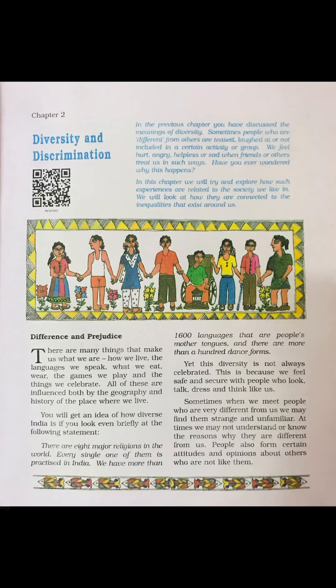And discrimination means — suppose in your class there are 20 students, but all do not belong to the same family, the same religion, or the same caste. They are different, coming from different backgrounds. But if a teacher discriminates between rich students and poor students by separating them, that is called discrimination. If we read this chapter, we will understand better. I am just giving you one example so you can understand the basic meaning of diversity and discrimination.